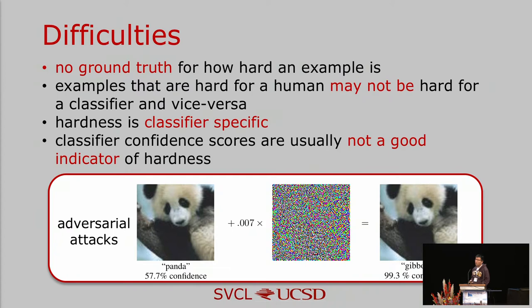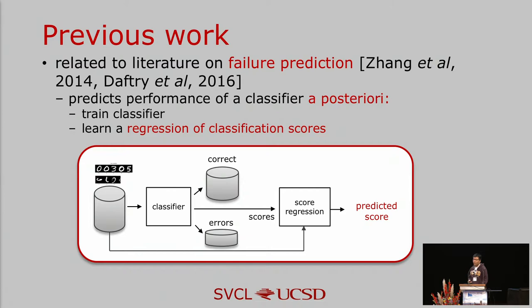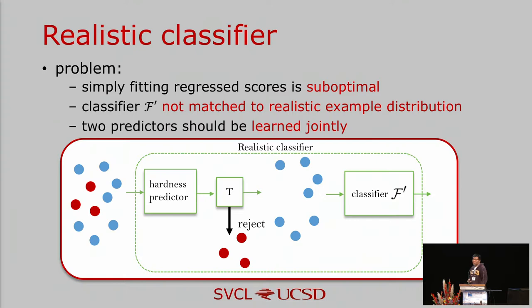We also think the confidence score is not good enough as it is self-referential — the scores are obtained by the classifier itself. A typical example is adversarial examples, which have very high confidence scores even though they are clearly incorrect. The most related work is failure prediction, which builds a system to predict failures of a predictor via post-hoc analysis, simply learning a regression or classifier from its mistakes. We think simply fitting regression scores is sub-optimal, and the hardness predictor should be classifier-specific, non-self-referential, and trained jointly with the classifier.